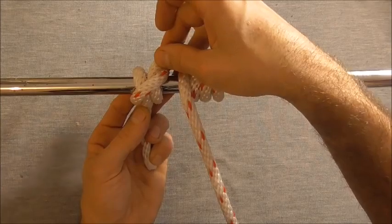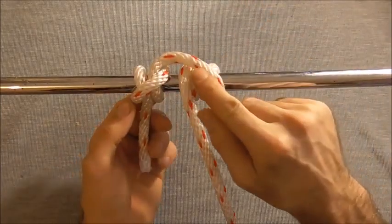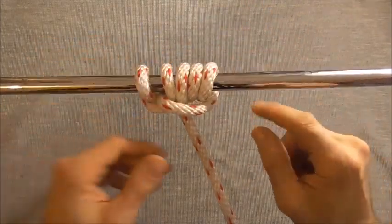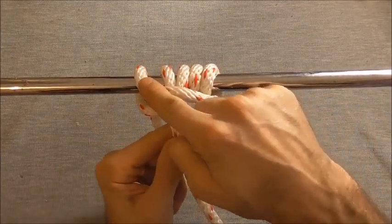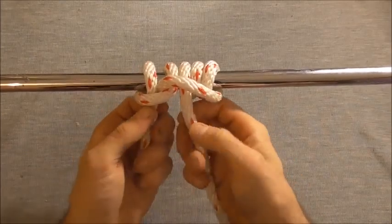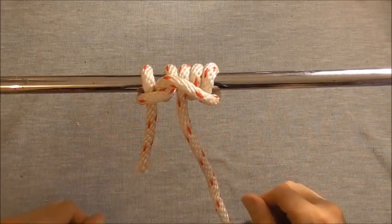So the way I like to remember how to tie this one is just to take a few wraps, make a cow hitch, make a clove hitch, and your knot's completed.